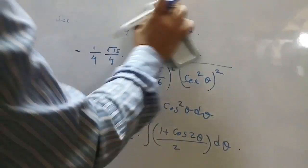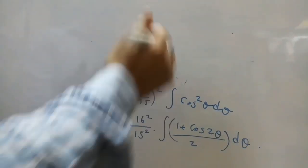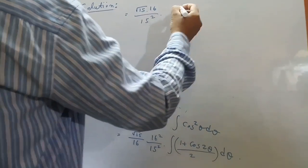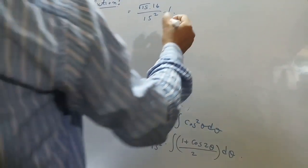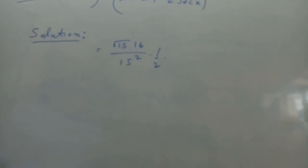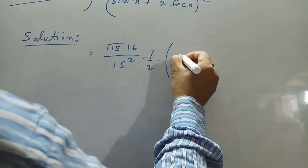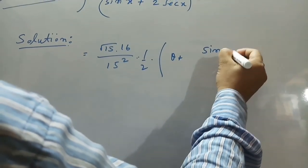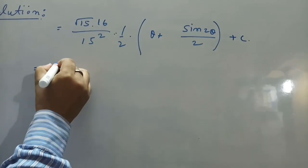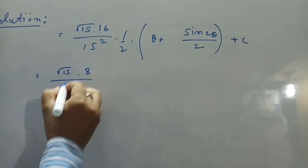After simplification this becomes (√15 × 16)/(15²) times 1/2. Then integrating: the integral of 1 is θ, and the integral of cos 2θ is sin 2θ divided by 2, plus C. Therefore: (√15 × 16)/(15²) and this becomes 8/15² times [θ + sin 2θ/2] plus C.